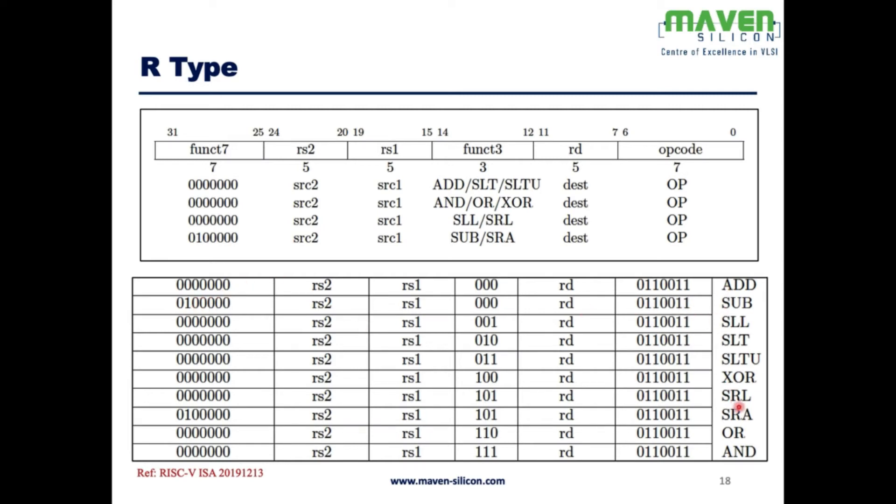For shift right logical and shift right arithmetic, we use the same value 101. To differentiate shift right arithmetic from shift right logical, we have to use the 30th bit. We use three bits for function3; these are various values we use for different instructions. This is the opcode which defines whether it is R-type: 0110011.